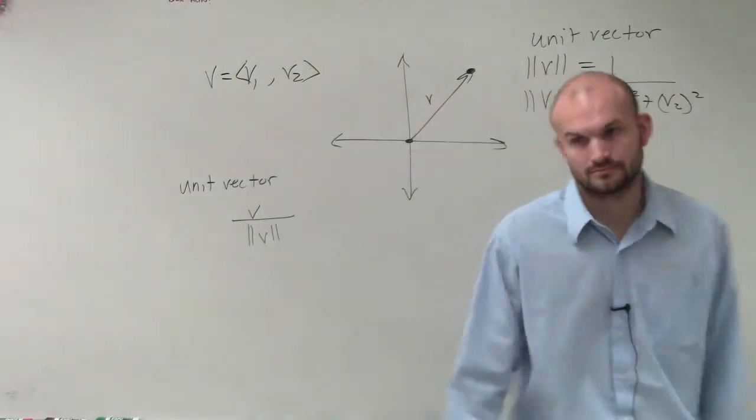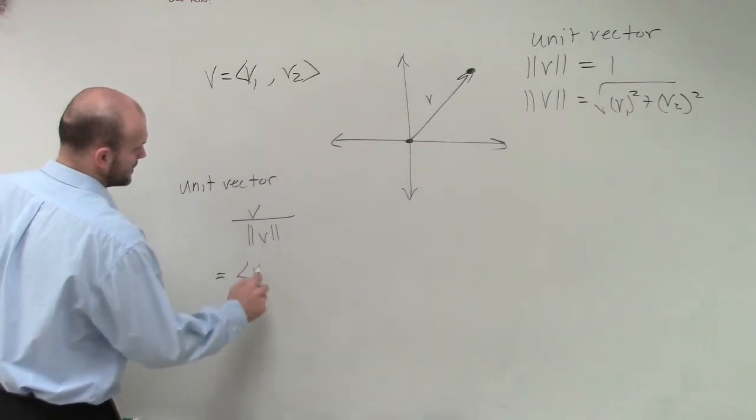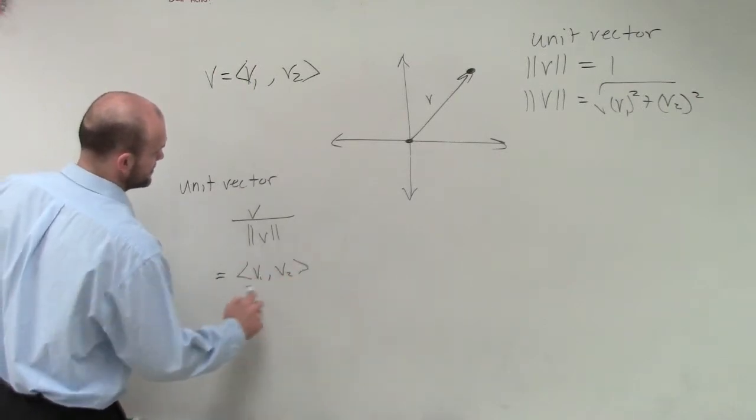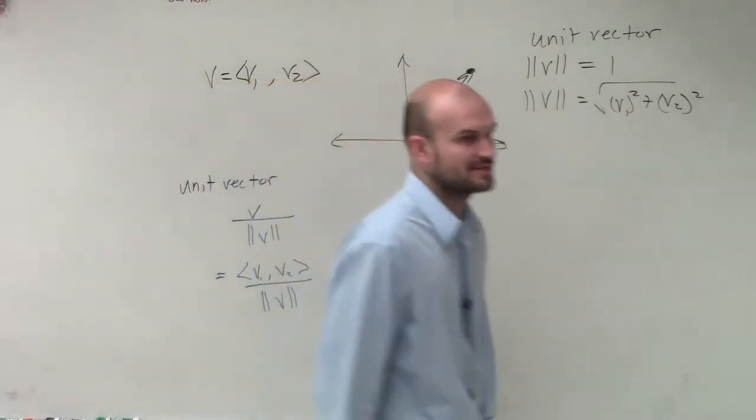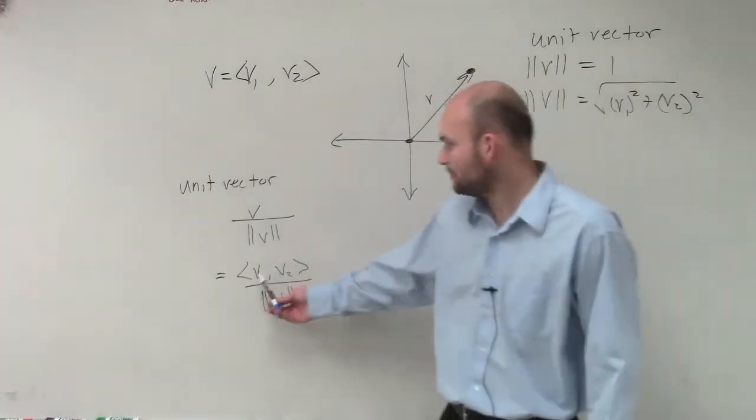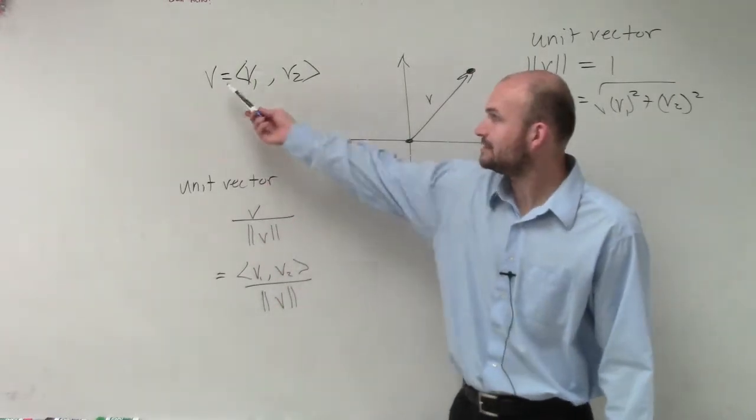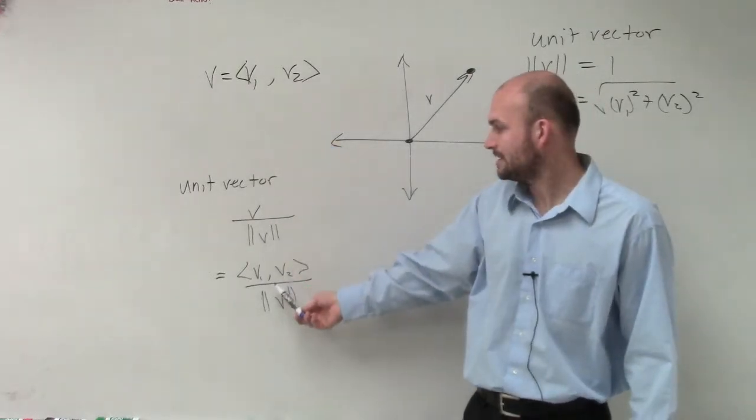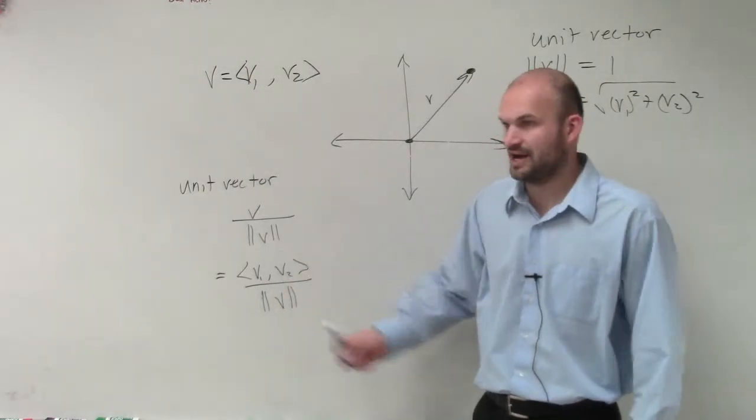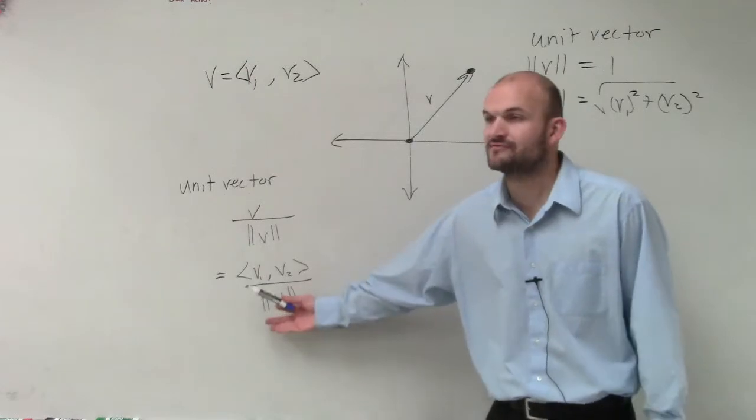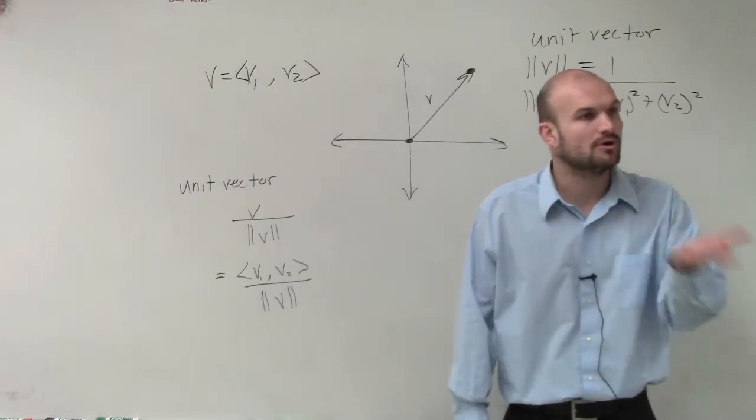Which vector? One or two. So I could rewrite that as v1 comma v2 divided by the magnitude of v. It's the exact same thing. But you guys just asked me, is it v1 or v2? It's both of them, v1 and v2. v1 and v2 make up v, right? v is equal to v1, v2. So it's the vector v, or v1, v2, however you want to write it to make sense for yourself, divided by the magnitude. I'll go through an example. But what you're doing is you're dividing your magnitude into both of those vectors. And we'll go through an example to kind of look at it.